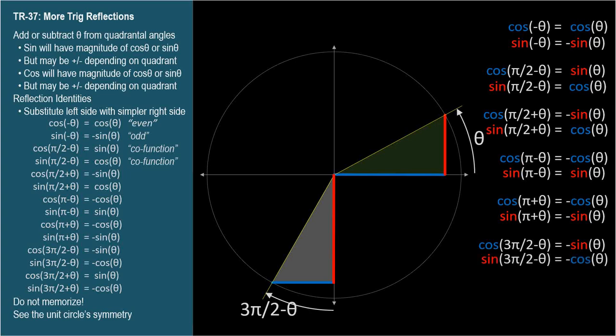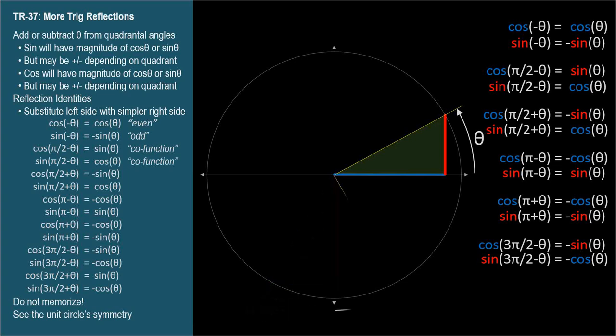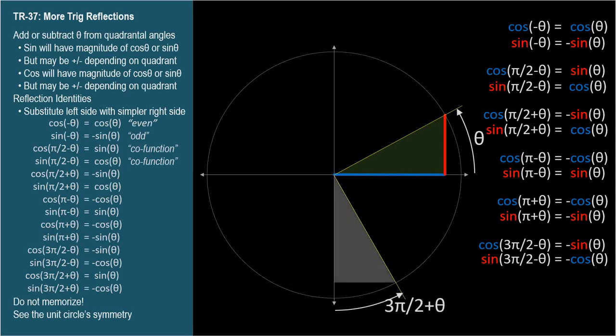And here's 3 pi over 2 plus theta. Cosine of 3 pi over 2 plus theta equals sine theta, and sine of 3 pi over 2 plus theta equals negative cosine theta.